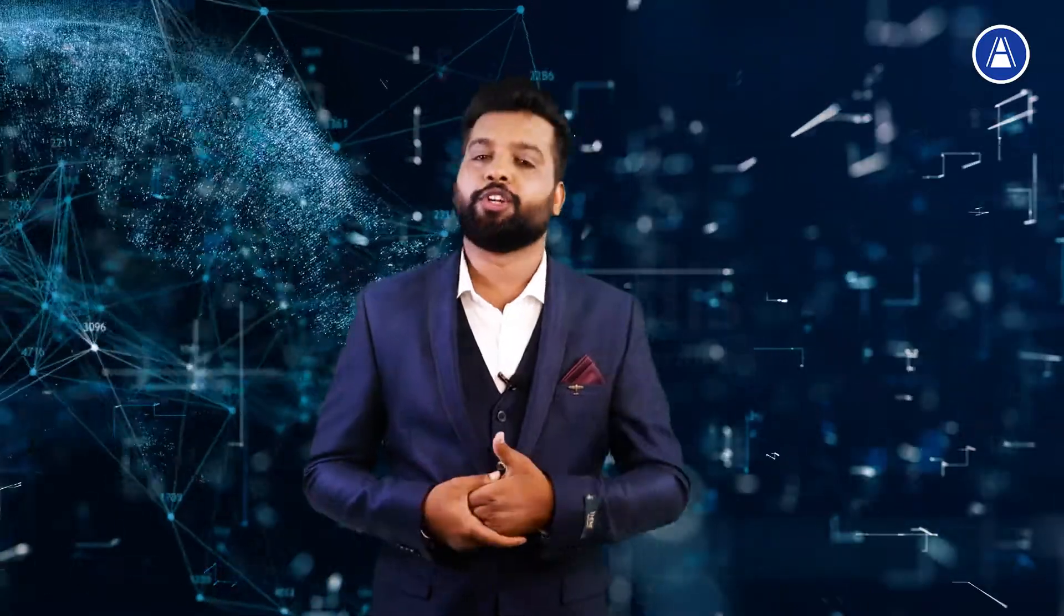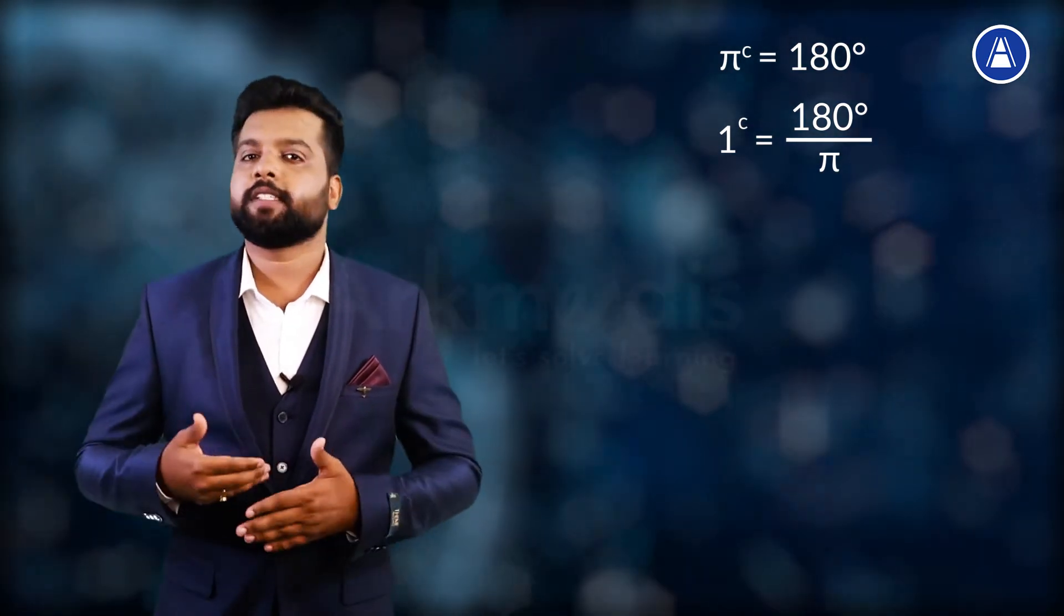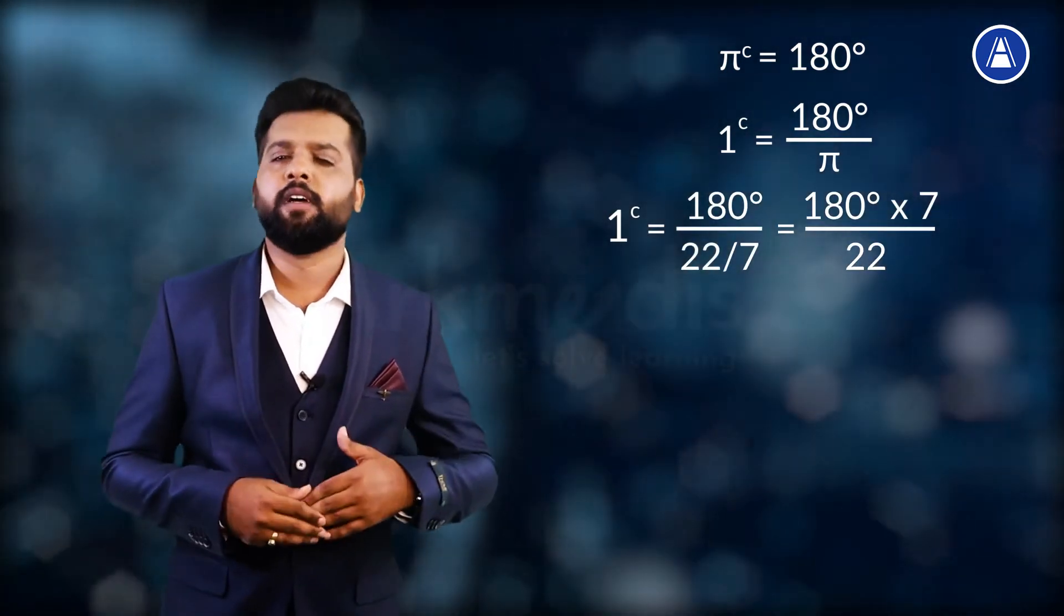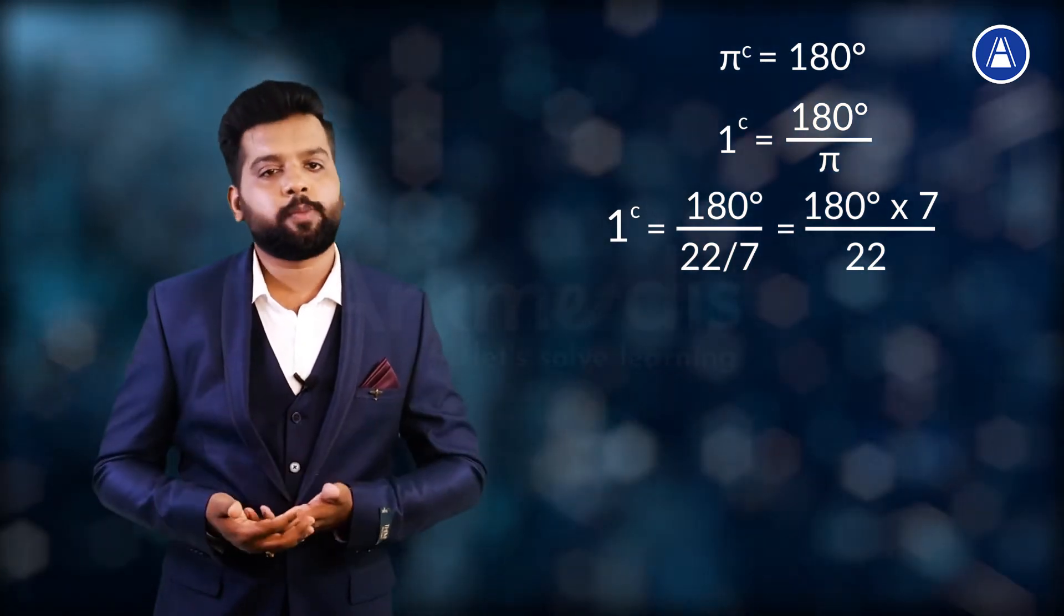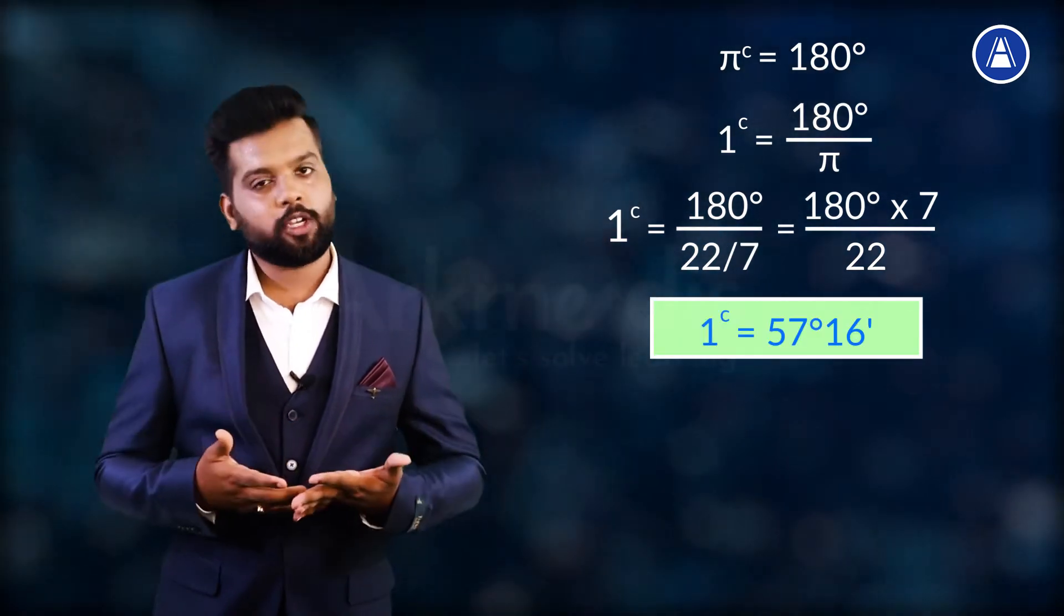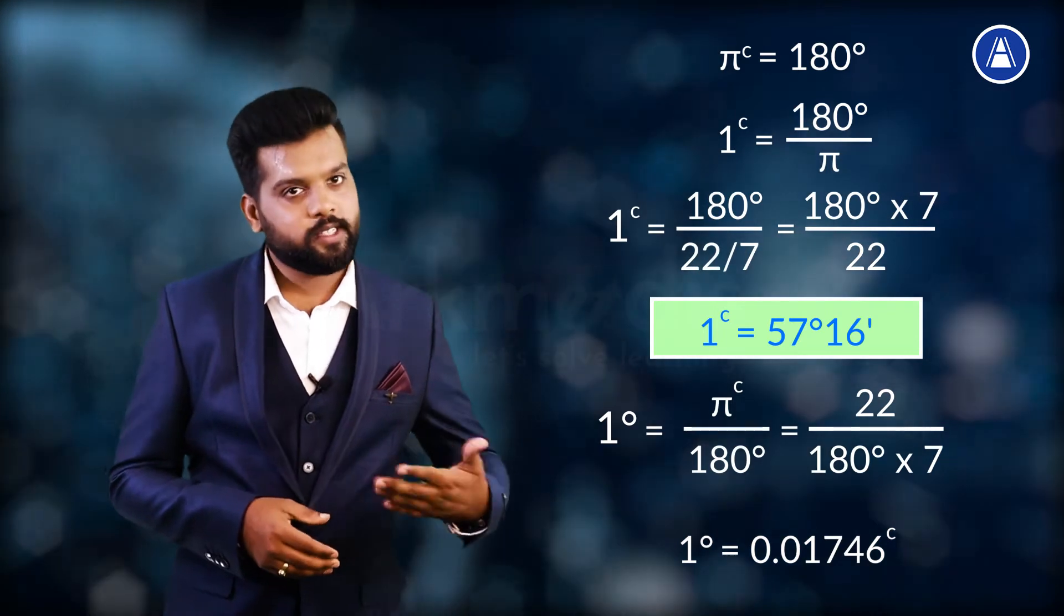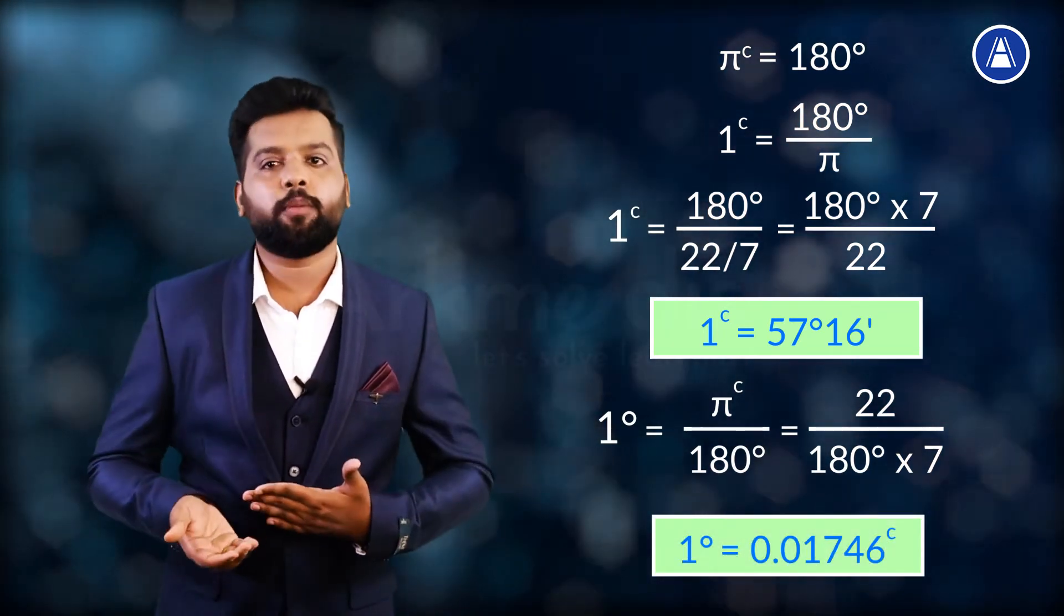Why write π when we can have the approximate value? Let us substitute the approximate value of π which is 22 by 7. We already know that π radians equals 180 degrees, which means 1 radian equals 180 degrees by π, which equals 180 degrees by 22 by 7. Solving that we get an approximate value of 1 radian which is 57 degrees and 16 minutes. Therefore 1 radian is approximately equal to 57 degrees 16 minutes, and 1 degree equals π by 180 radians, which is approximately equal to 0.01746 radians. This is all about the relation between radians and degrees.